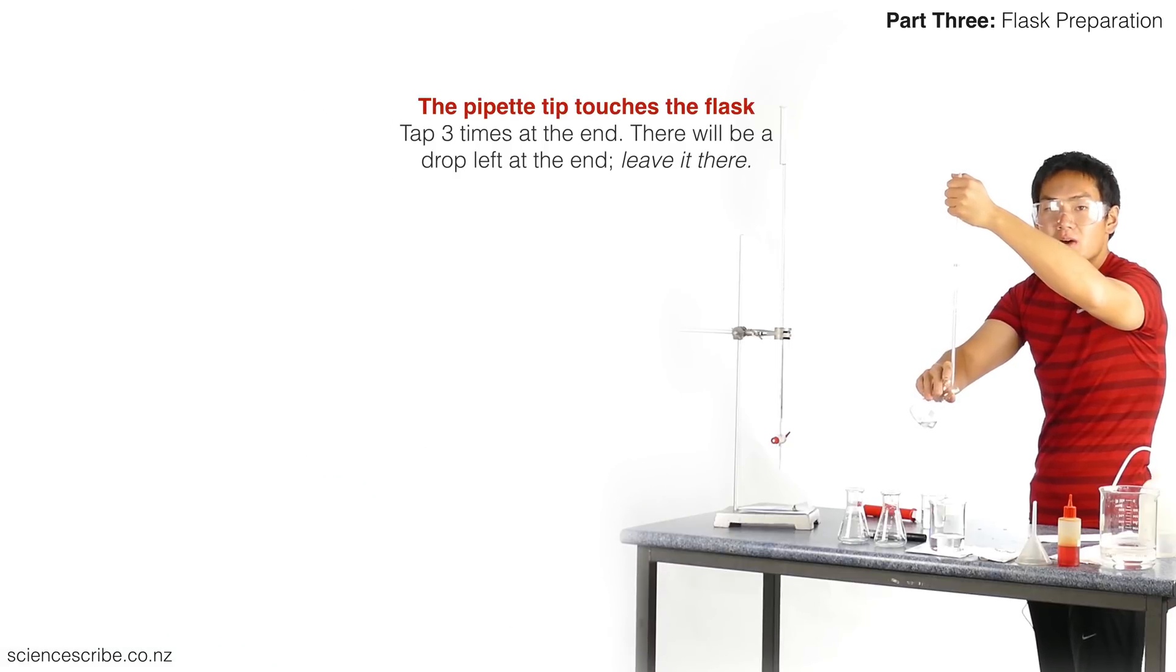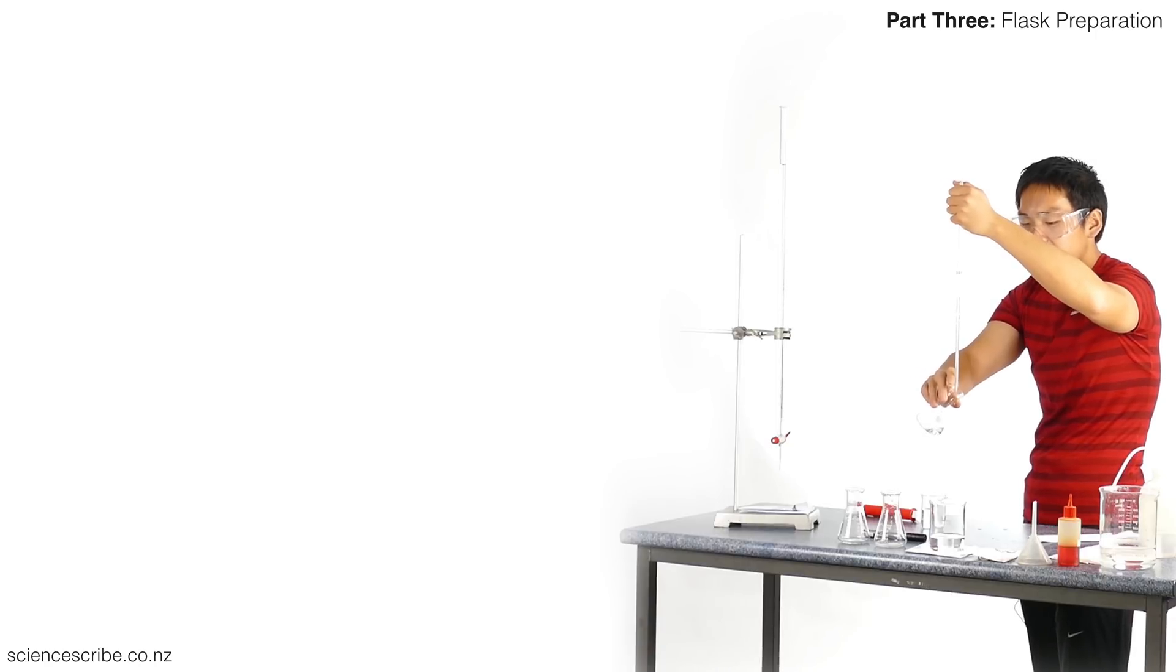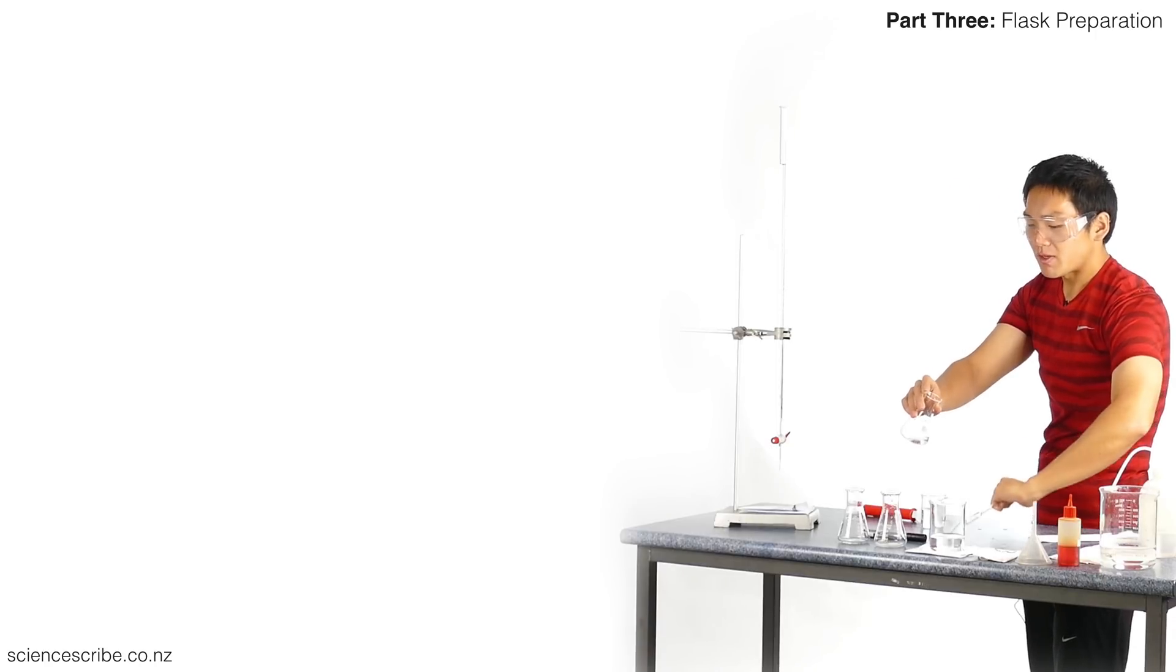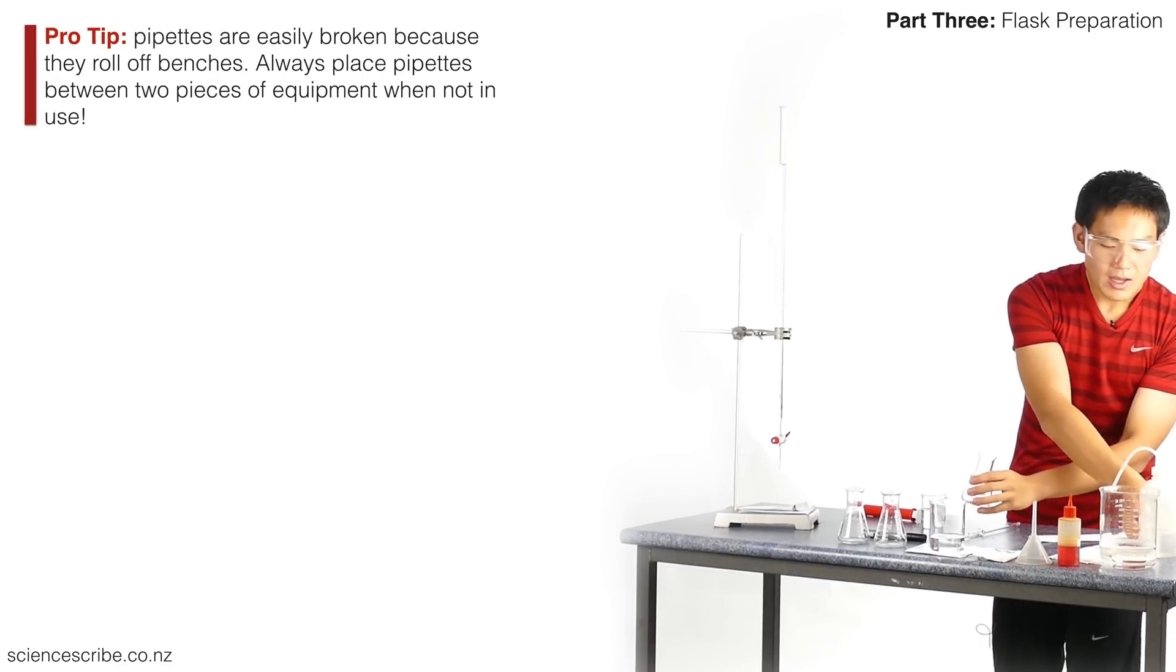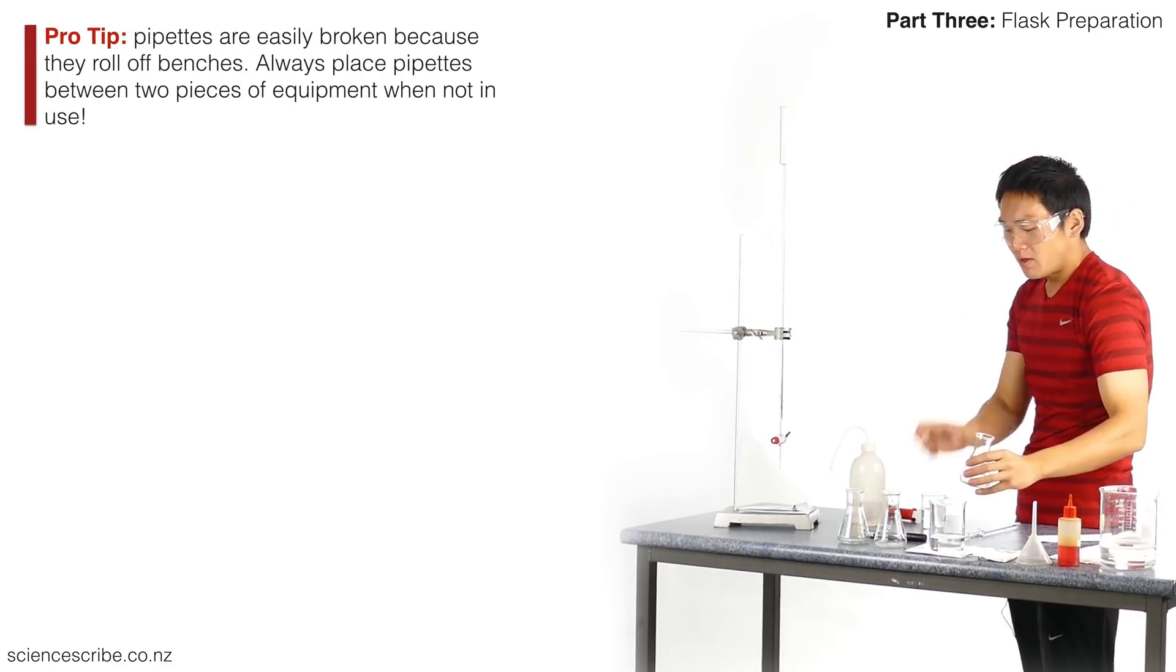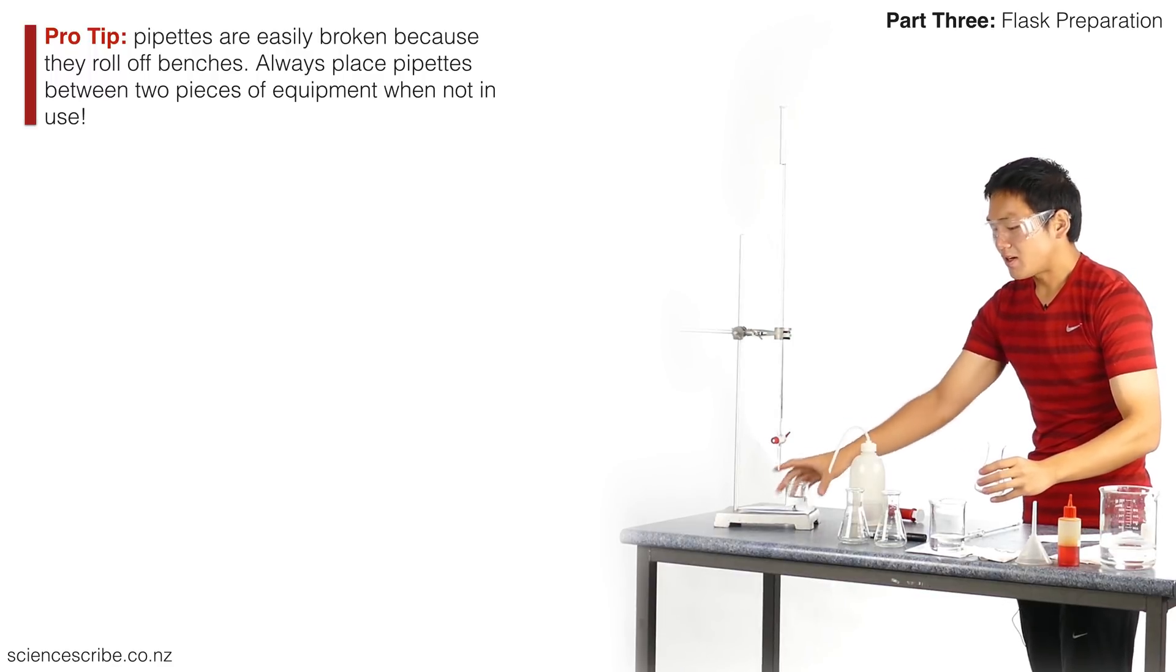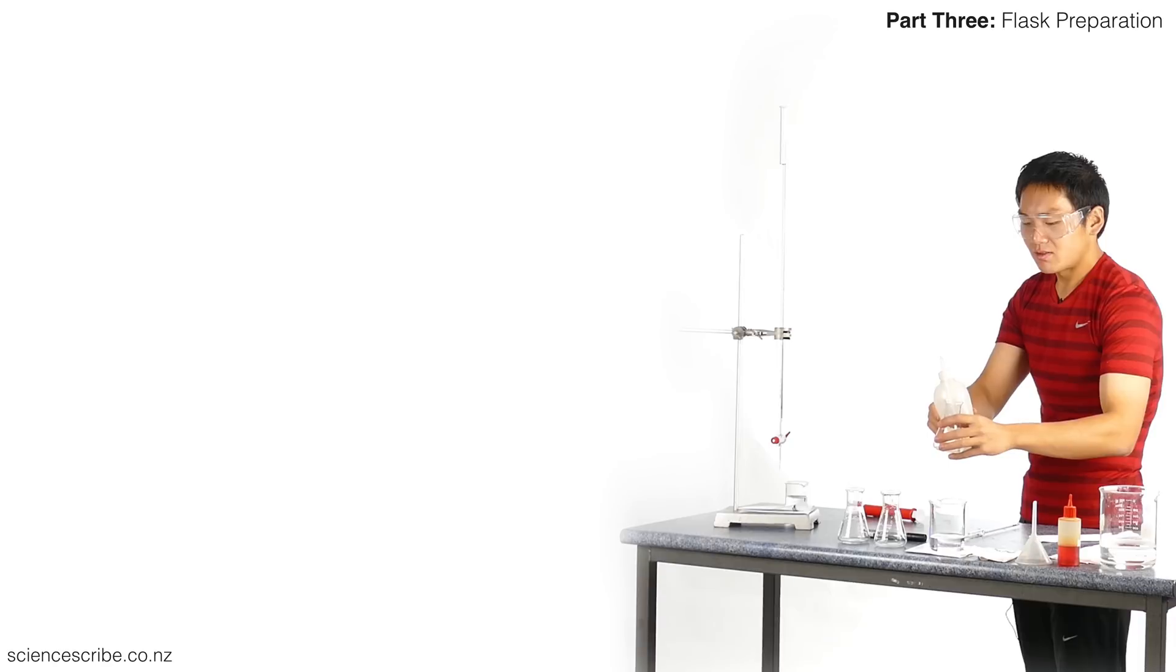That's done. I'm going to sit my pipette down, but remember what I said about pipettes—be careful where you place them. Place them between two pieces of equipment. There's still some liquid on the side of my conical flask. We are going to wash that down using a wash bottle. If you want to be safe, move your solutions off to the side so you don't get any risks of spills and contamination. Just wash that drop down.